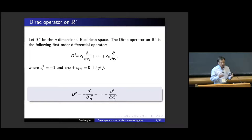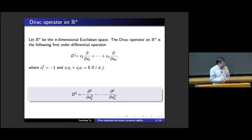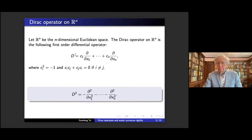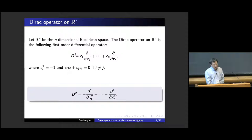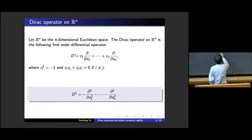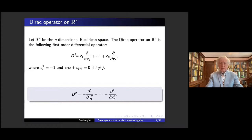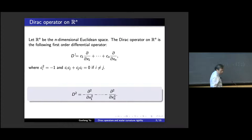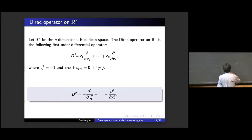Let's think about the 2D case. The coefficient matrix is something like a pair of matrices — essentially a Pauli matrix. You can choose the matrices so that if you square them and use the key anticommutation formula, you get exactly the Laplacian. In doing the computation, I need to use this crucial formula — I believe it's called Clairaut's formula. This formula is very crucial: in order for the square to be the Laplacian, we must use it.